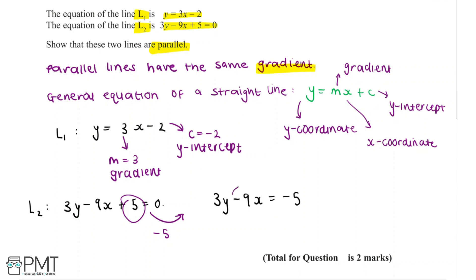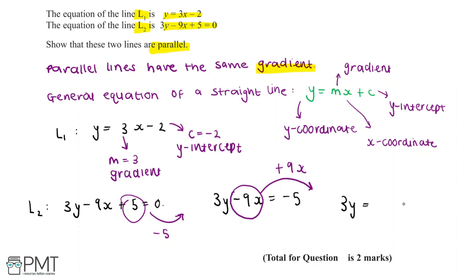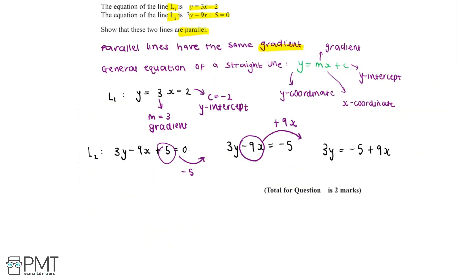Now we need to move the minus 9x term. To take it to the other side, we do the opposite, so we add 9x to each side. This leaves us with 3y equals minus 5 plus 9x. We can rewrite this in a way more similar to y equals mx plus c as 3y equals 9x minus 5.